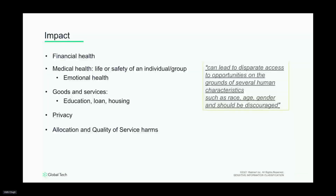What's the impact if something goes wrong? If we talk about fairness, it can deprive someone from quality of service. A biased solution can lead someone to not have appropriate access to goods and services like education, loans, or housing, which can take a toll on their medical, emotional, or financial health. In crisp terms, it can lead to unequal access to opportunities for humans based on characteristics such as race, age, or gender — and this kind of discrimination is highly disparaged.